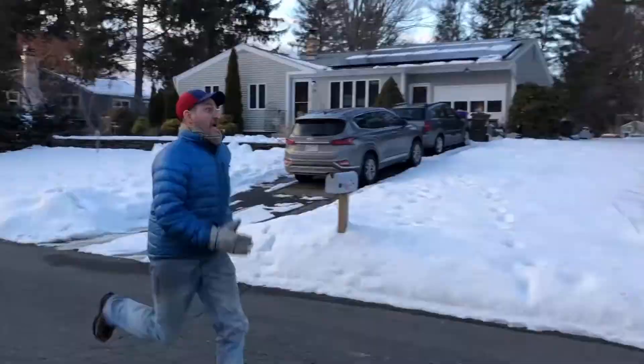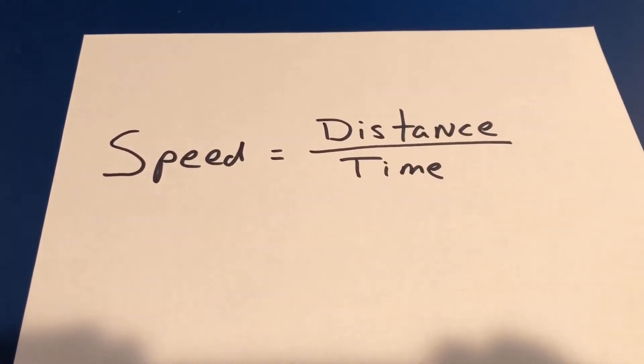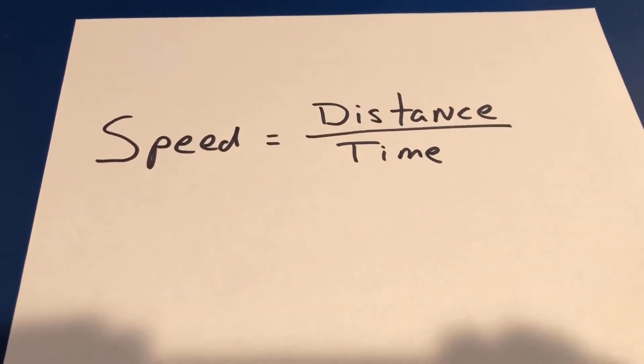Since speed and velocity are almost the same thing, let's learn how to calculate speed and then we'll just add the direction. The formula for speed is distance divided by time.